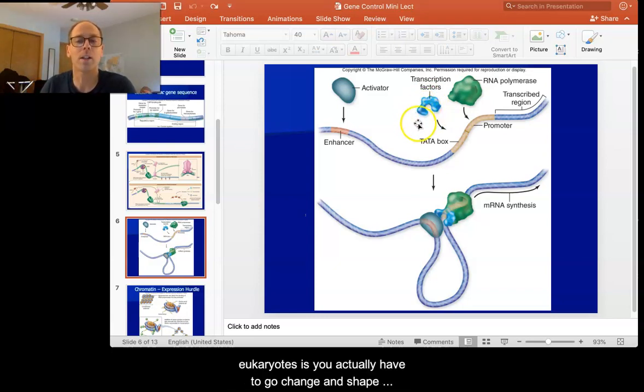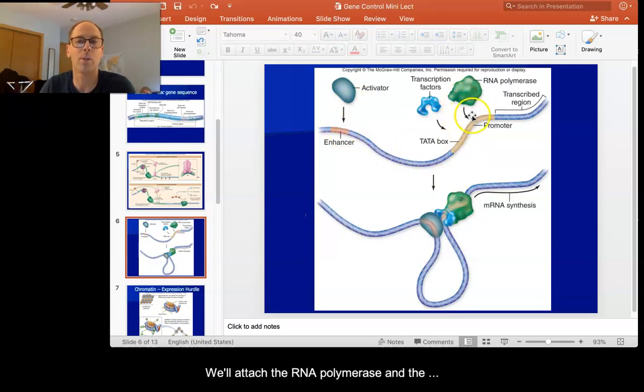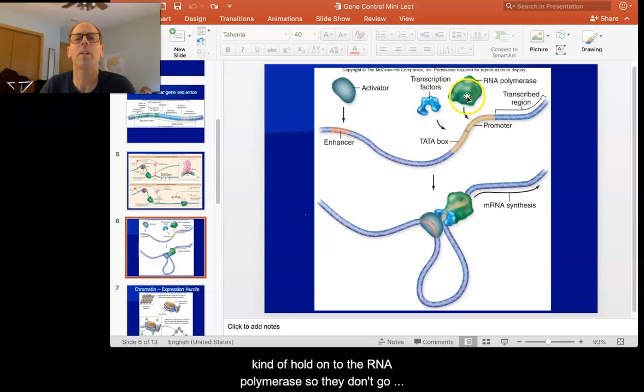What's different about eukaryotes is you actually have to get a change in shape of the DNA molecule. We'll attach this activator here to the enhancer, we'll attach the RNA polymerase and the transcription factor, but the transcription factors kind of hold on to the RNA polymerase. They don't go anywhere. So what happens is the DNA actually has to fold, and you can see it's got this bend here, so that the activator attached to the enhancer touches the transcription factor. Once that happens, the RNA polymerase is released and that gene gets expressed.